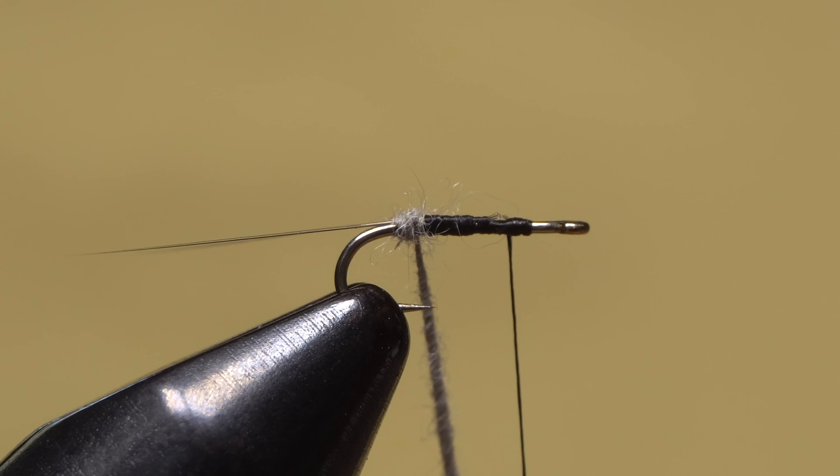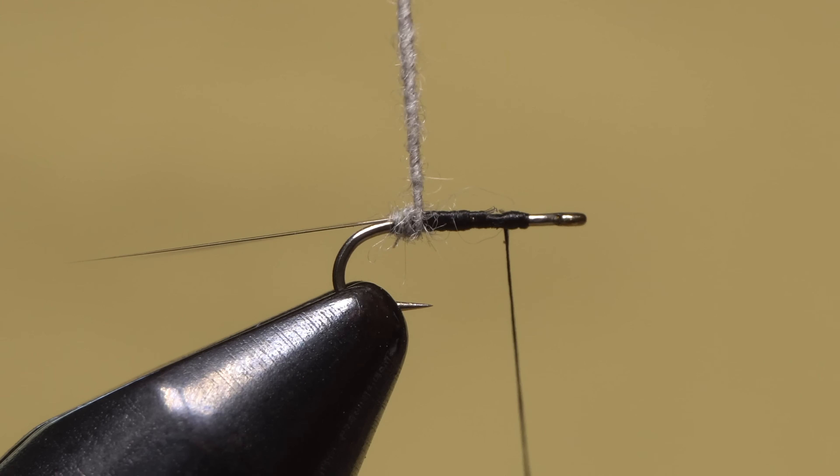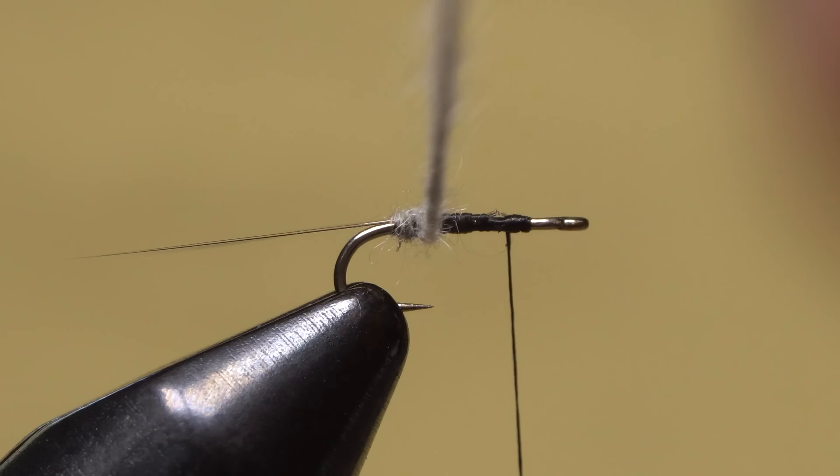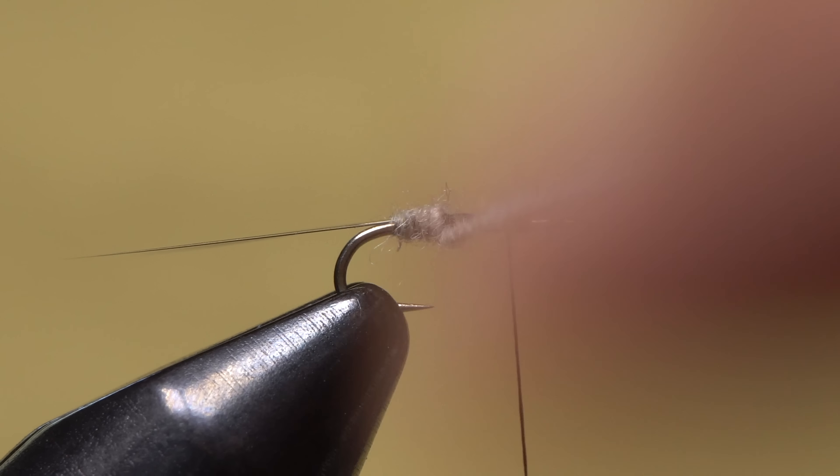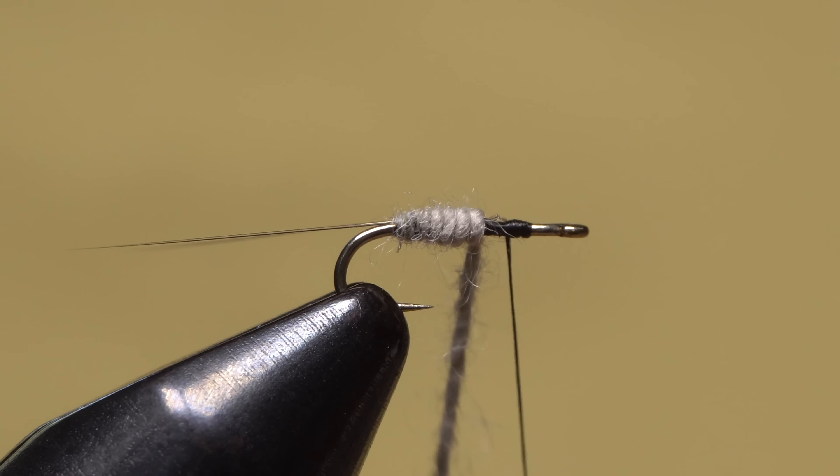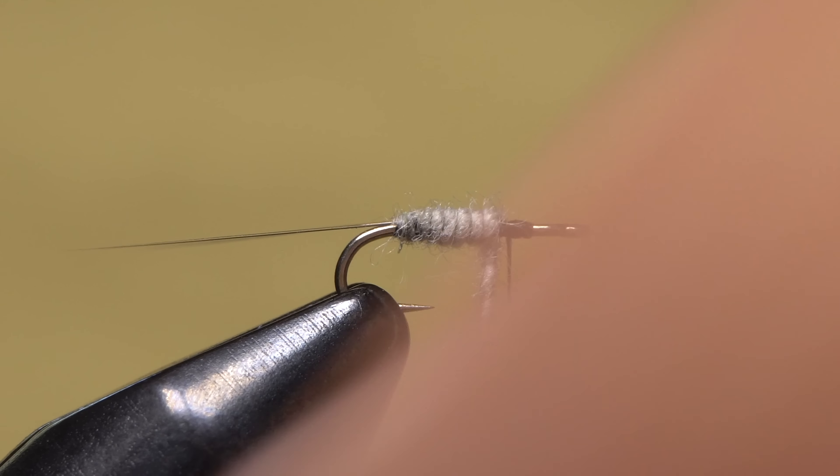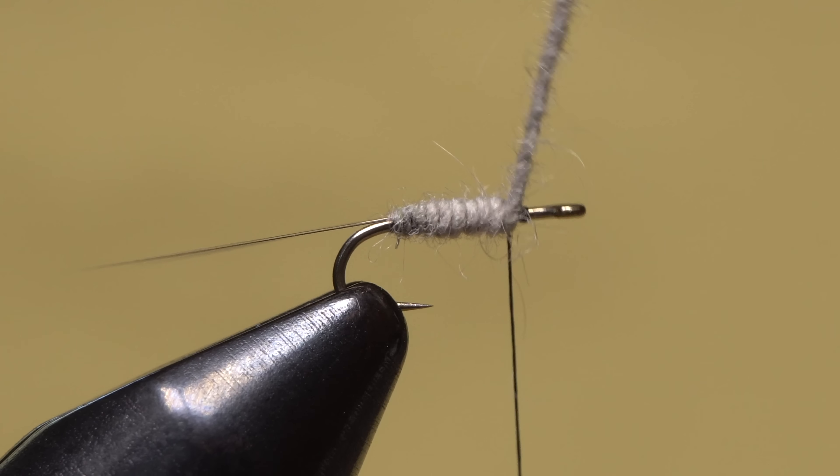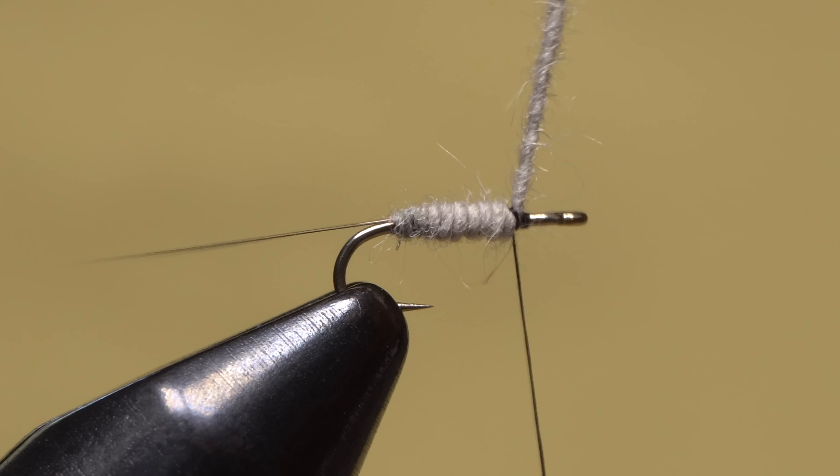You can then start taking wraps with the corded up noodle beginning right at the base of the tail. The first wrap or two can be a bit tricky as they'll want to jump forward because the noodle's so spun up. It gets better once you get going. Keep taking touching wraps with the noodle up the hook shank to form a nicely segmented and slightly tapered body on the fly.